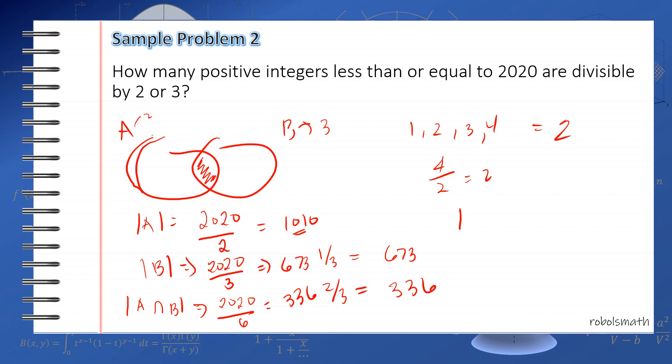So the answer here? 1010 plus 673 minus 336. So the answer is 1347.